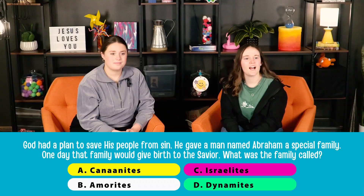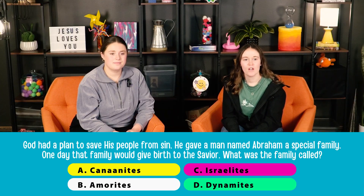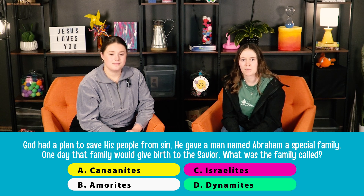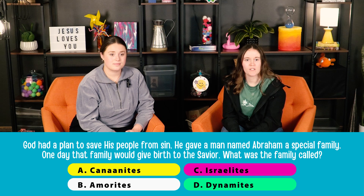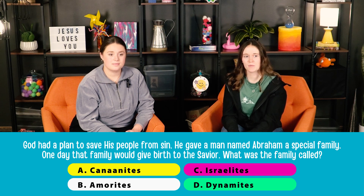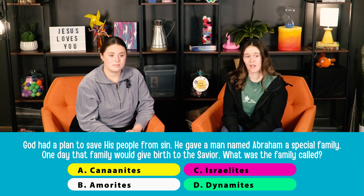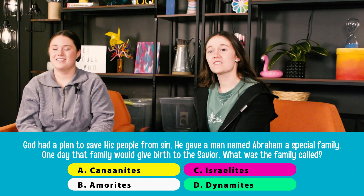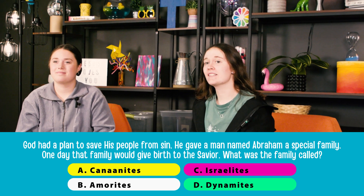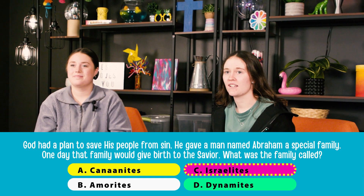God had a plan to save His people from sin. He gave a man named Abraham a special family. One day, that family would give birth to the Savior. What was that family called? A: the Canaanites. B: Amorites. C: Israelites. Or D: dynamite. The correct answer is C — Israelites.